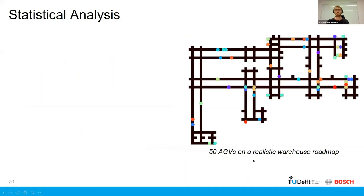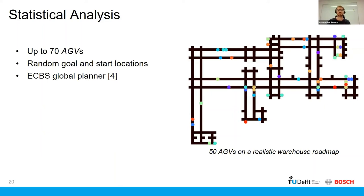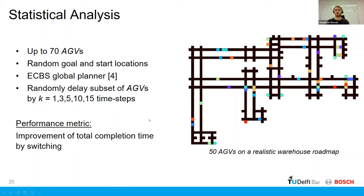So let's look at just a statistical analysis of this method. So we consider this warehouse roadmap here on the right, and we took up to 70 AGVs and then we randomized the goal and start locations. And then we used this aforementioned ECBS planner. And now we took 20% of the AGVs, like a randomly selected 20%, and then we would delay them by a variety of different time steps.